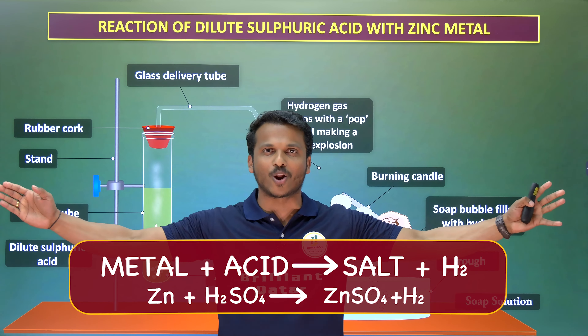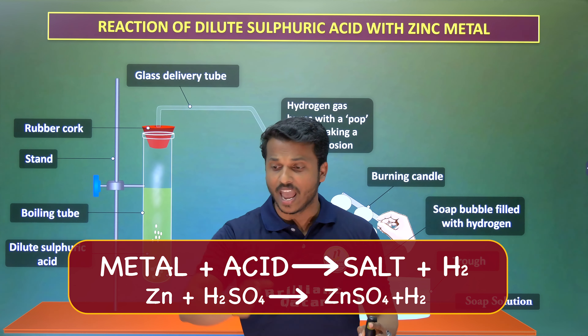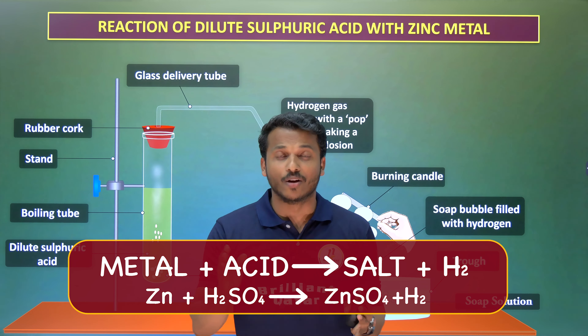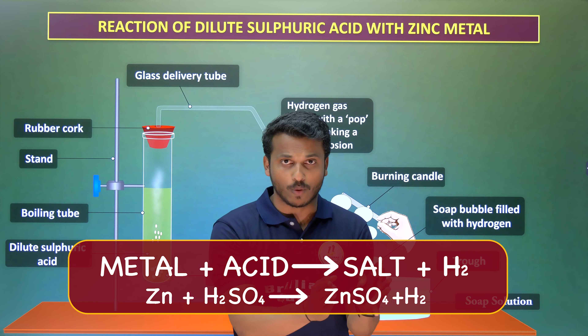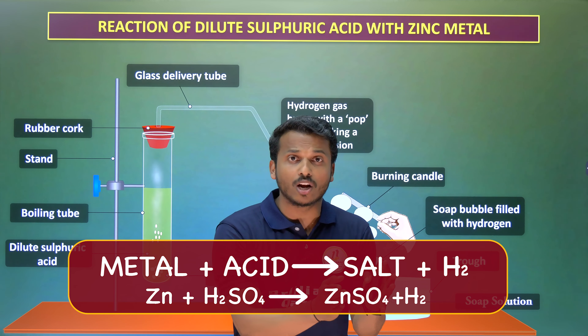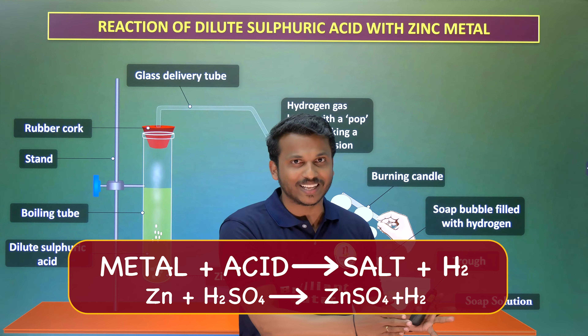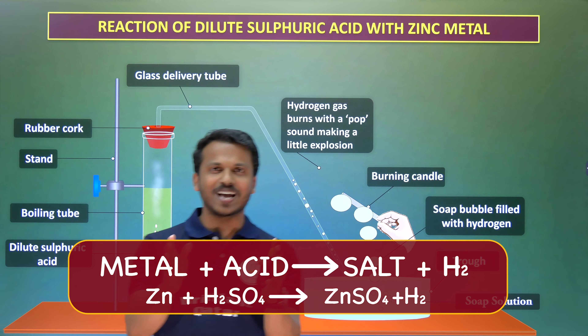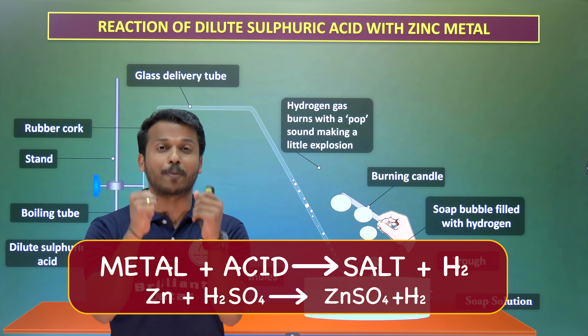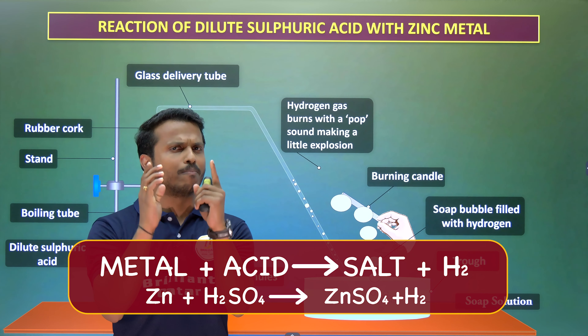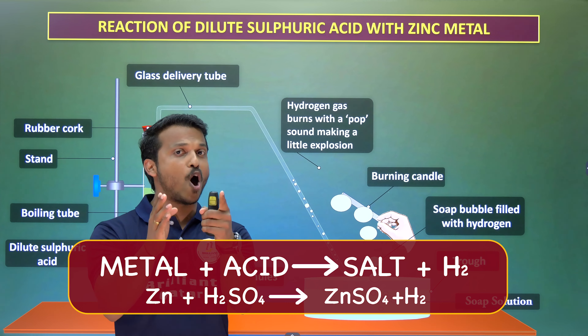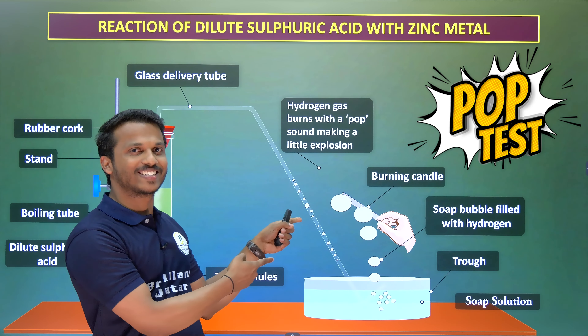The overall conclusion: when a metal reacts with any acid, you get salt plus hydrogen gas. The presence of this hydrogen gas can be identified by the pop test.